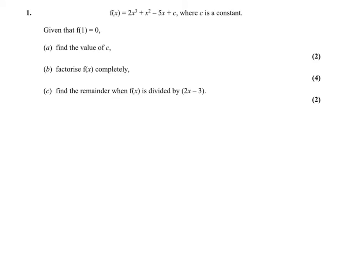Question one, we've got this function here. It says given that f(1) equals zero, find the value of c. All you've got to do is substitute in 1 for x, so you've got 2 times 1 cubed plus 1 squared minus 5 times 1 plus c, and you know that equals zero. You can do that fairly straightforward, although I do need to tell you that c equals 2.